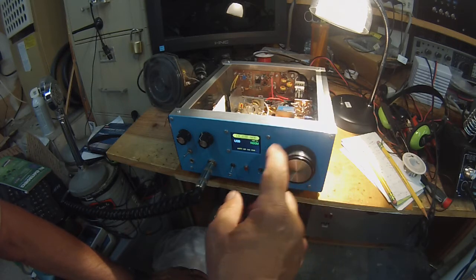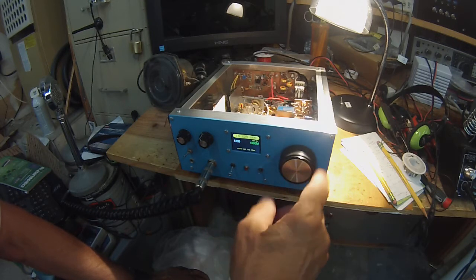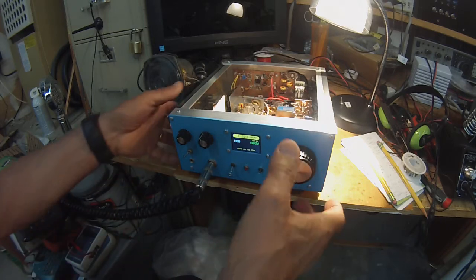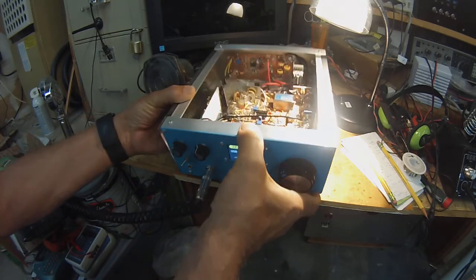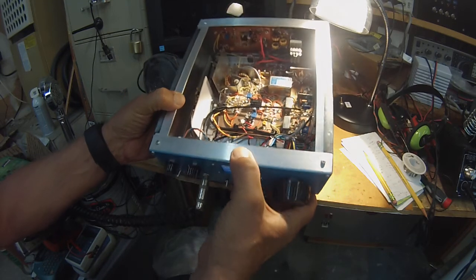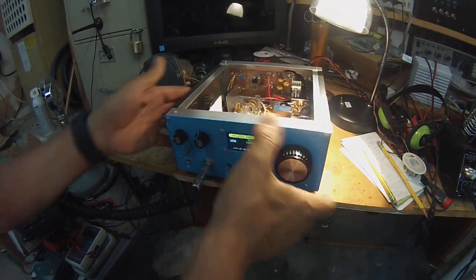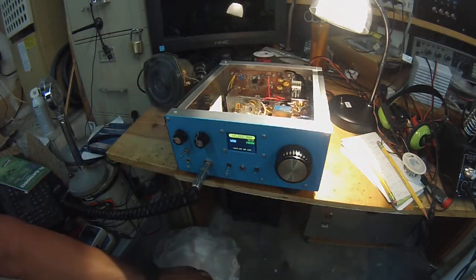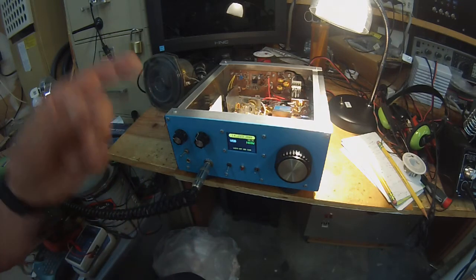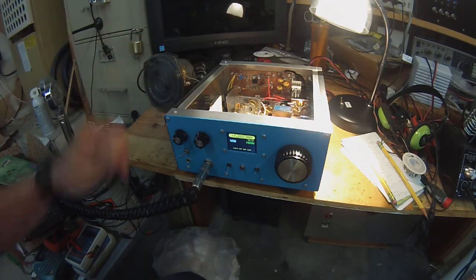Here, Pete N6QW demonstrating the LM373 transceiver. I'll just tilt this up this way so you can see the homebrew case here. Sides are made out of galvanized sheet metal, front panel is aluminum, some aluminum stock from Home Depot.